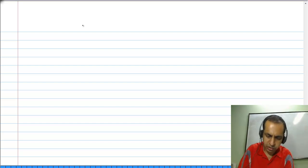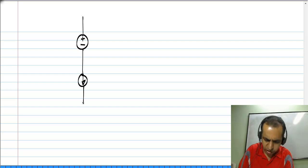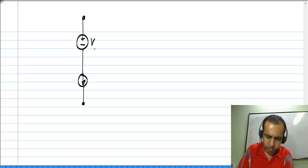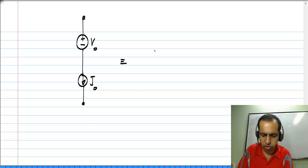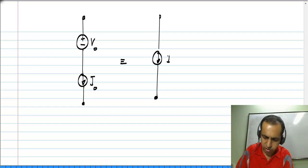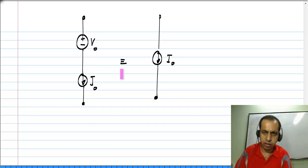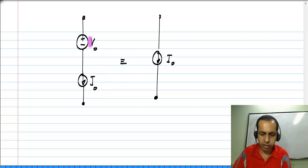So, this means that if you have a voltage source and a current source in series — say this has some value V naught and this has some value I naught — the whole thing is equivalent to a current source. This is a perfectly legal connection; the voltage across the current source can be anything, and the current through the voltage source will happen to be I naught.